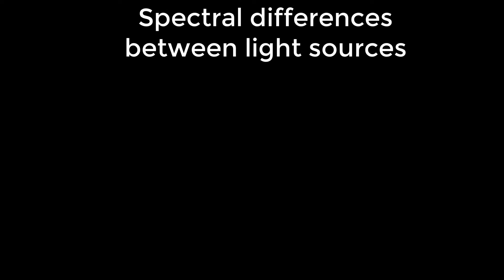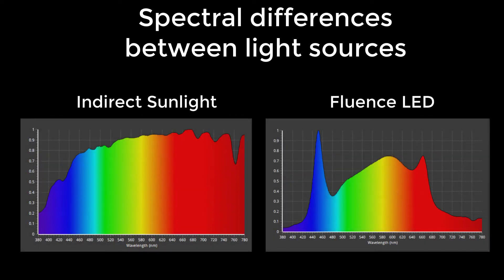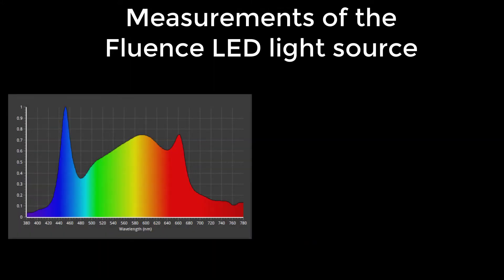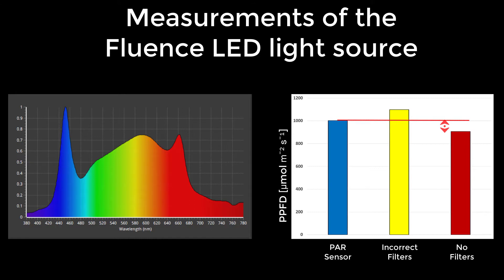Here's the spectral output from the Fluence LED compared to sunlight. Some key differences are a peak of blue light in the LED, a small valley between the blue and green transition, and a lot less far-red light from this particular source. Looking at the photosynthetic photon flux density chart, the PAR sensor measures at about 1000. The sensor with slightly incorrect filters overestimates by about 10%, most likely due to the proportion of green and red light. The sensor without filters underestimates by about 10%, most likely due to the reduction in red and far-red light.